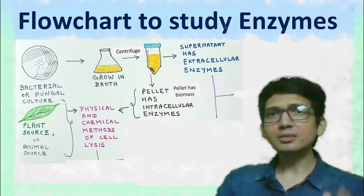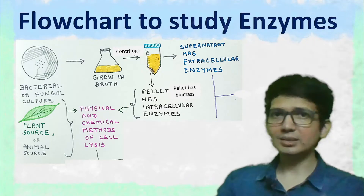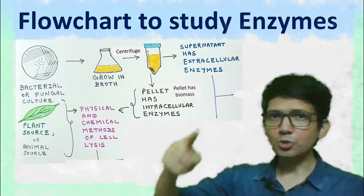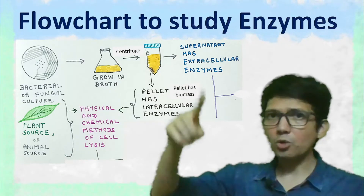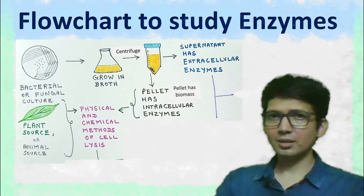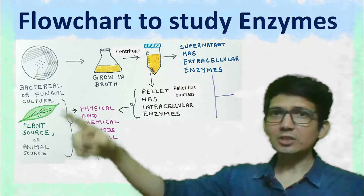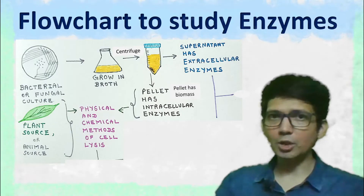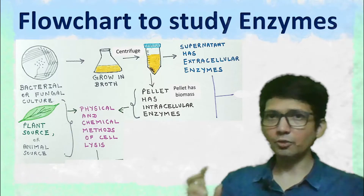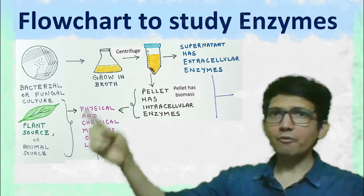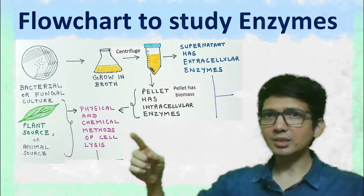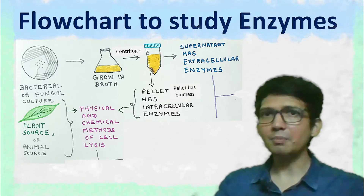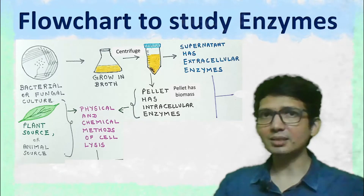Now if the enzyme of interest is intracellular, then we need to collect the biomass. Also, in the case of plants, most of the enzymes will be intracellular. So for this, we need to give chemical and physical treatment for the extraction of enzyme by cell lysis.